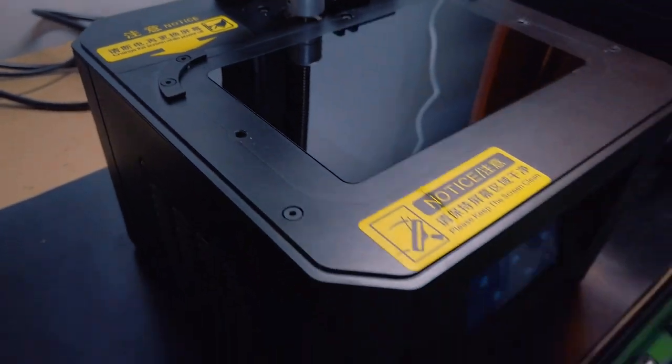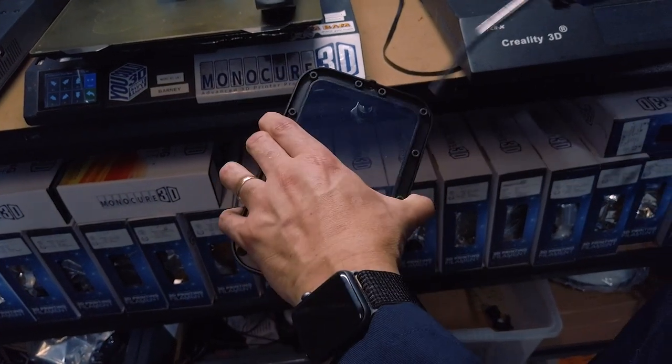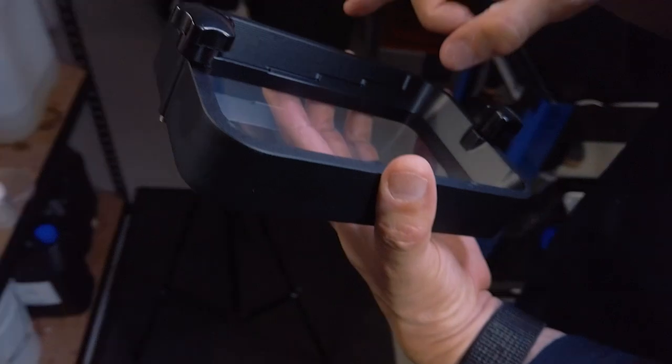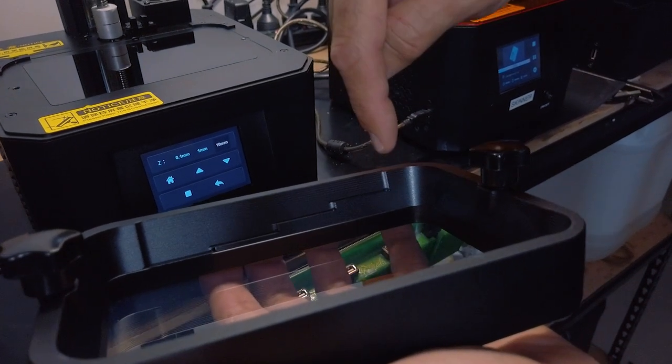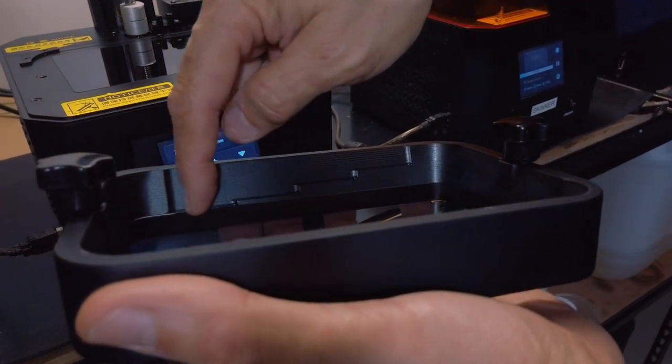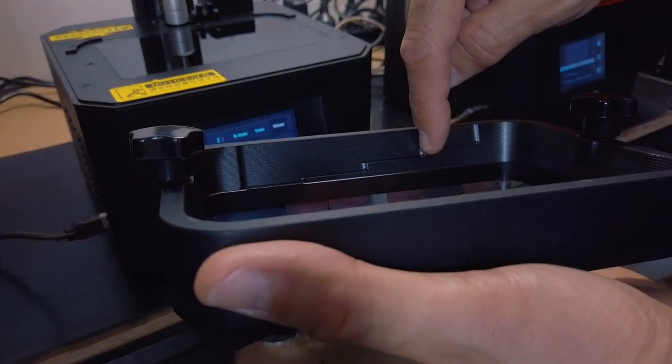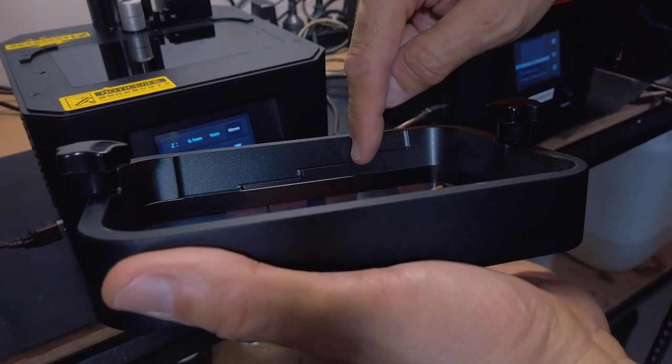So I'm going to go clean this vat out. You can hear the FEP screen is quite tight. As with the Creality vats that we've seen in the past, they have graduation steps. If you look online you'll be able to find a reference to say how many mills this represents.